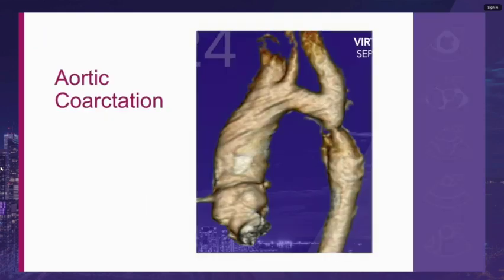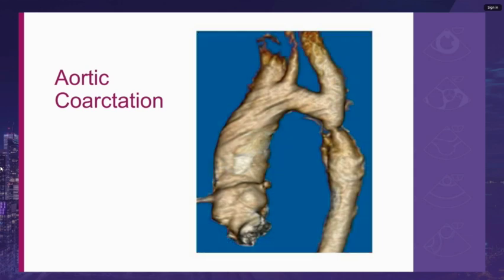Coarctation of the aorta commonly occurs at the ductus arteriosus level, though many anatomic variants exist. Narrowing at the aortic isthmus results in hypertension, which is also a consequence of reduced aortic compliance, endothelial dysfunction, and activation of the renin-angiotensin-aldosterone system. It is associated with other congenital abnormalities, most notably bicuspid aortic valves in up to 75% of cases. It is quite common with a 4 per 10,000 live birth incidence, presenting at different stages of life depending on severity.